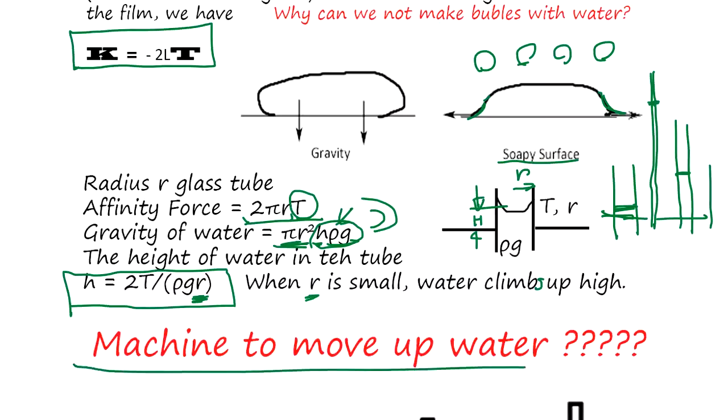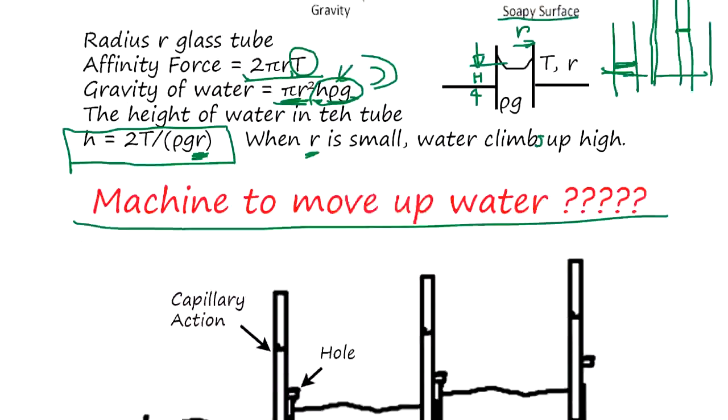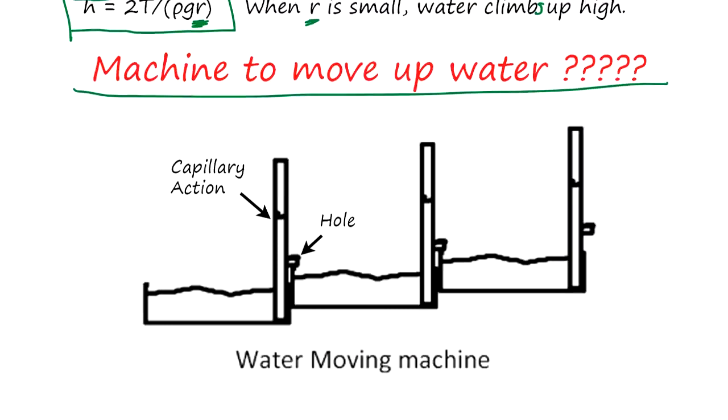So I propose this kind of machine. You have a glass tube and make a hole - the water drips out. Glass tube, make a hole, water drips out. You just cascade this, then water moves up.